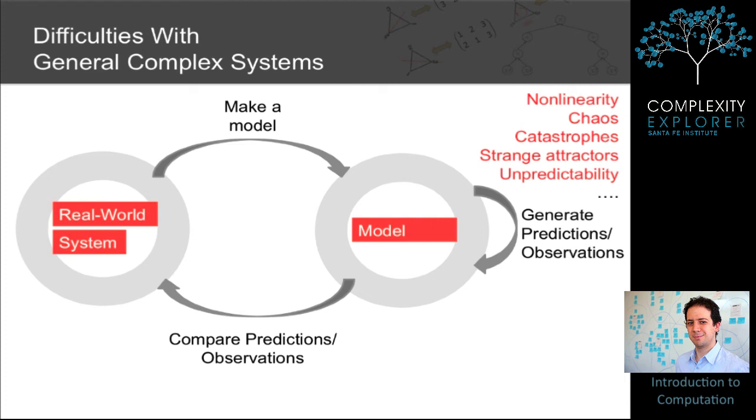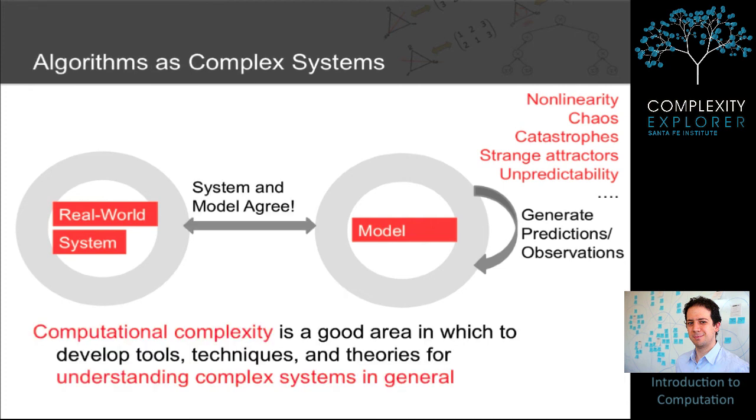But in computational complexity, the picture looks more like this. The real world system and the model essentially agree. If you prove a theorem that something happens in an algorithm, that thing actually happens when the algorithm is run on a computer or robot. So studying computational complexity allows us to focus on the mathematics and simplifies many of the tasks of research.